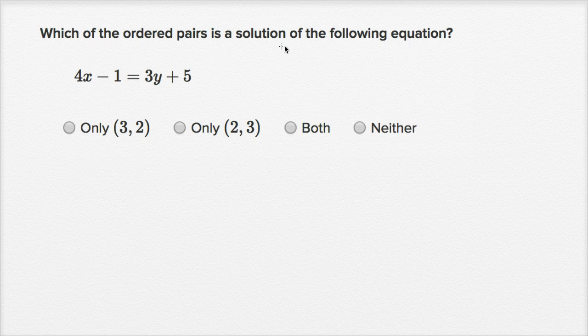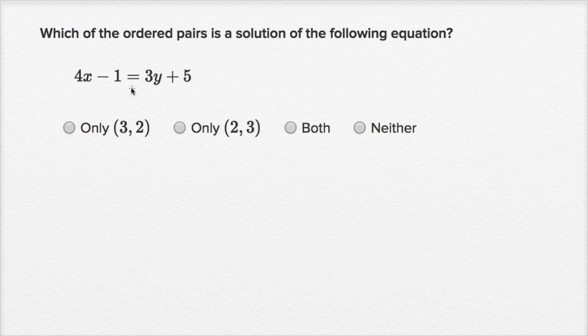Which of the ordered pairs is a solution of the following equation? 4x - 1 = 3y + 5.